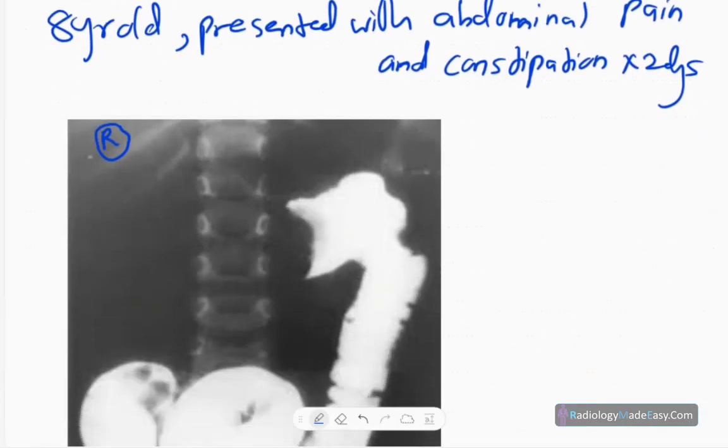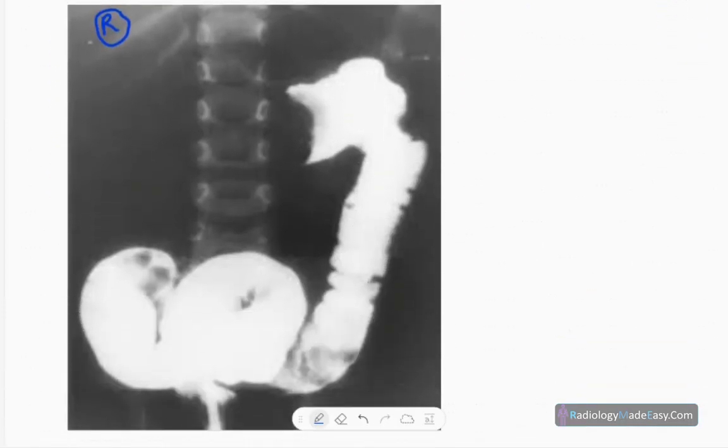This is the anterior-posterior spot radiograph of a lower GI contrast study series. You can see a broad cut-off of contrast in the distal transverse colon. There's a clear cut-off of contrast and you can see a concave appearance.